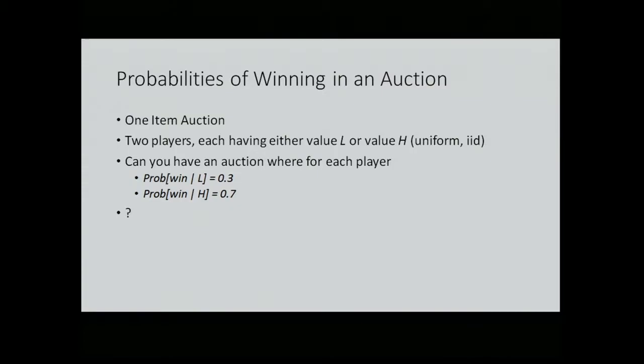We're selling one item and we have two players. Each one can have either a low value or a high value. The question is: can you design any auction where, if you have a low value, you win with probability 30%, and if you have a high value, you win with probability 70%? I'm only talking about whether you can get the probabilities to work out — don't worry about games or strategies.